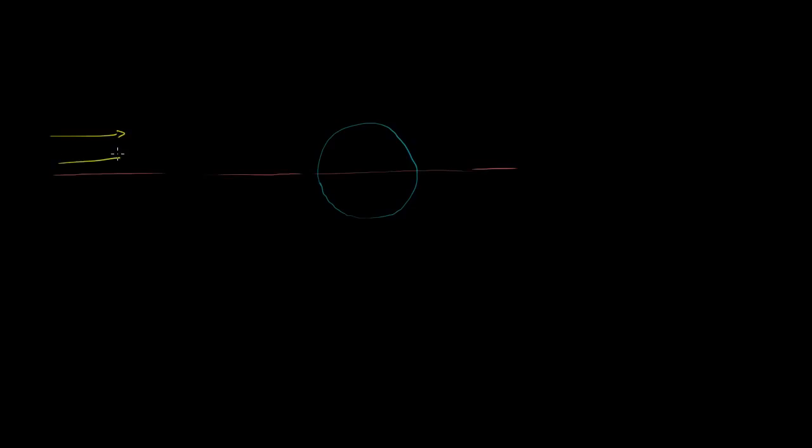We've learned in previous videos that relative to the orbital plane around the sun, or the plane of Earth's orbit around the sun, the Earth has a certain tilt. If this is the orbital plane right over here, looking sideways along it, with the sun to the left and rays coming in from that direction, we've learned that Earth has a certain tilt — meaning the axis around which it rotates is not straight up from the orbital plane; it is at an angle.